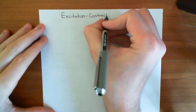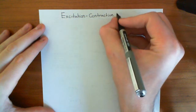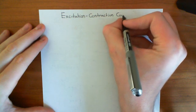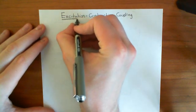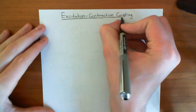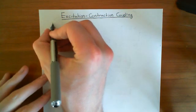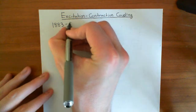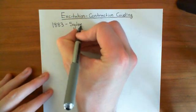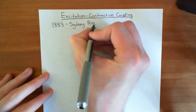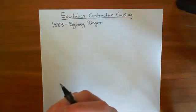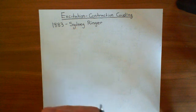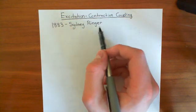An experiment that was done over a hundred years ago shows us that excitation-contraction coupling in the heart has to be very different from excitation-contraction coupling in skeletal muscle. This is the experiment done in 1883 by Sidney Ringer — quite a famous experiment in physiology, and it was actually done by accident when one of his lab assistants made a mistake, which led to a very, very important discovery.